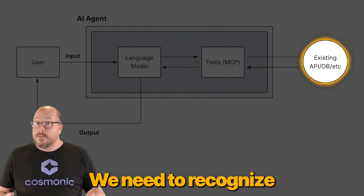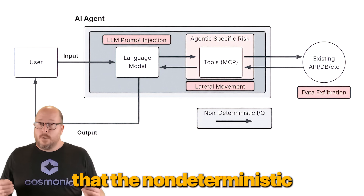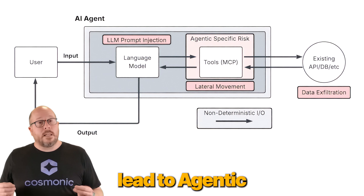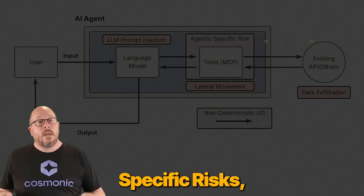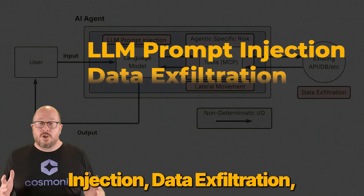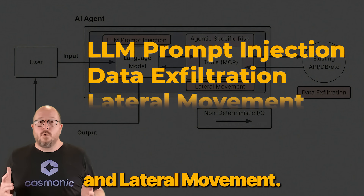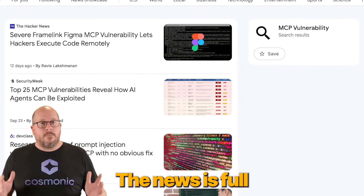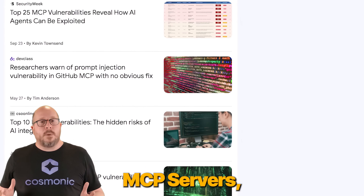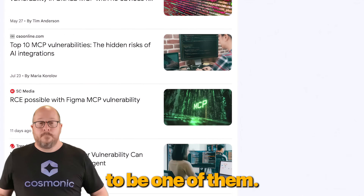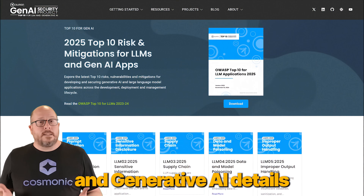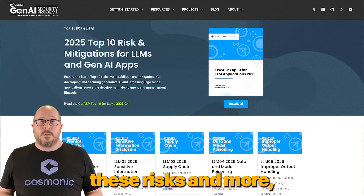The non-deterministic inputs and outputs of AI workflows lead to agentic-specific risks like LLM prompt injection, data exfiltration, and lateral movement. The news is full of exploited, poorly implemented MCP servers, and you don't want to be one of them. The OWASP Top 10 for LLM and Generative AI details these risks and more, highlighting exploits like remote code execution, command injection, direct content exfiltration, credential leakage, network pivoting, trusted path exploitation, and more.